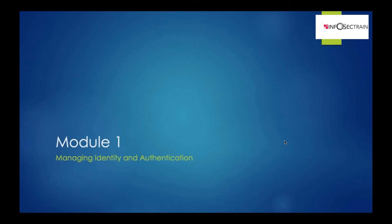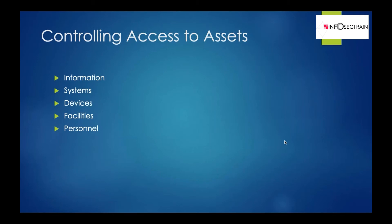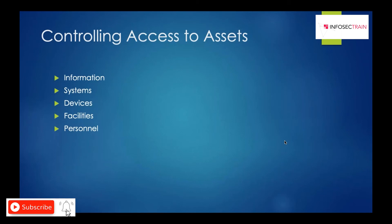Starting with module one — managing identity and authentication — the first thing we need to understand is controlling access to assets. Assets could be anything: information such as your data, file servers, or systems holding that data all need to be protected. Systems used to store or process sensitive data — servers and databases — must be properly protected against unauthorized access.